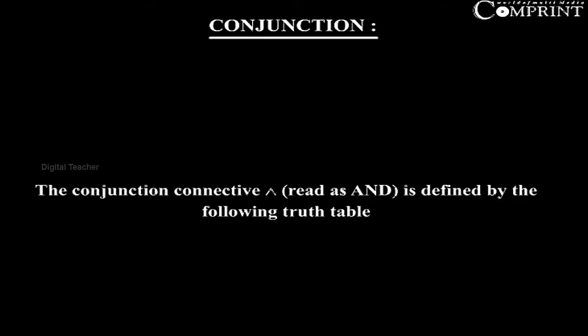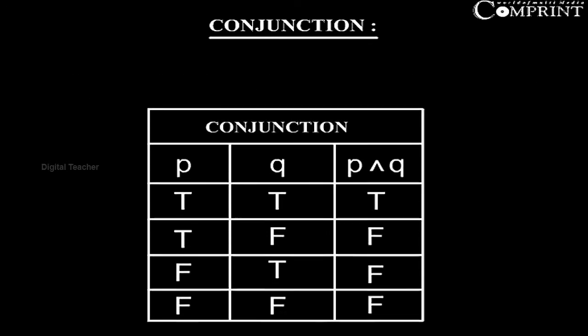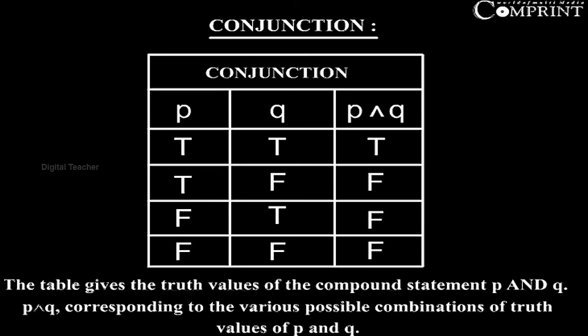Conjunction. The conjunction connective is defined by the following truth table. The table gives the truth values of the compound statement P and Q, corresponding to the various possible combinations of truth values of P and Q.